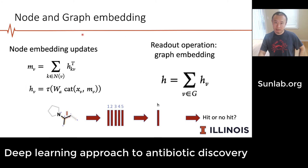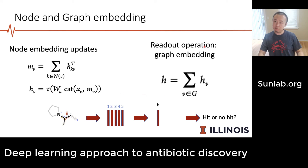From the edge embeddings they can further define node messages to get the node embeddings. Finally, once you have the node embedding on each vertex, you sum them all up to get the graph embedding. This operation is called the readout operation, and the resulting h embedding corresponds to the entire graph and is used as a feature vector for the classifier.